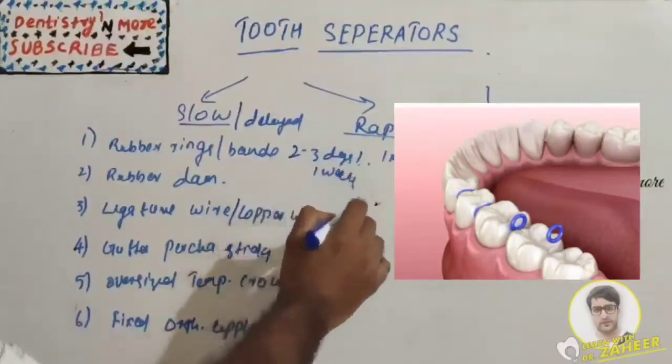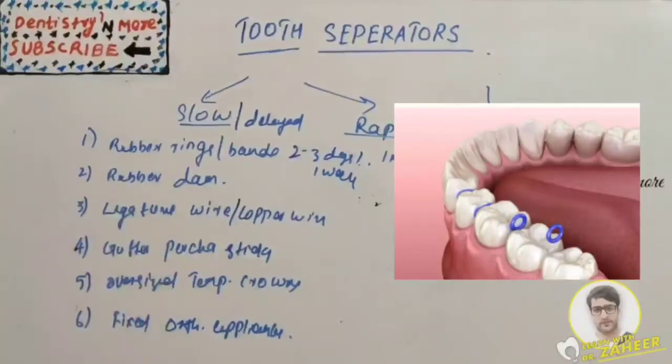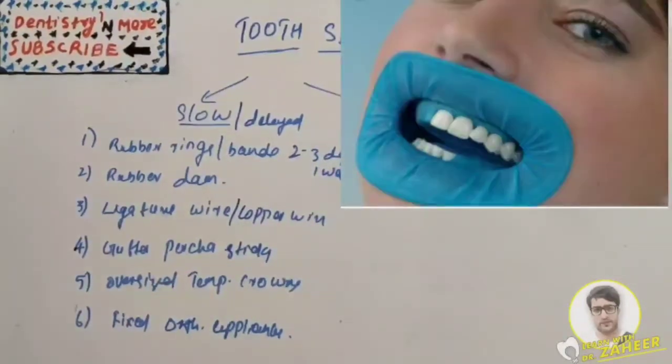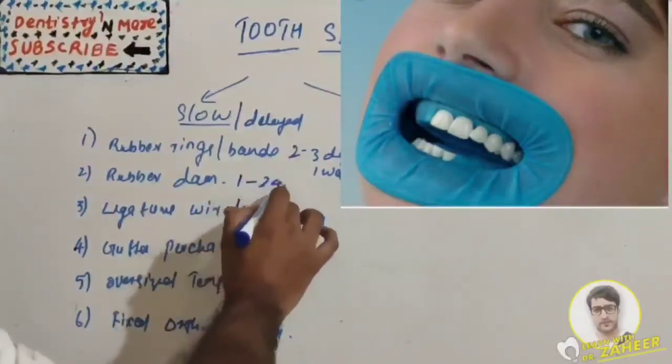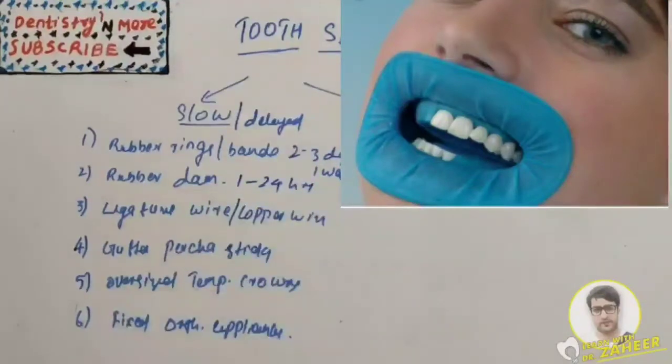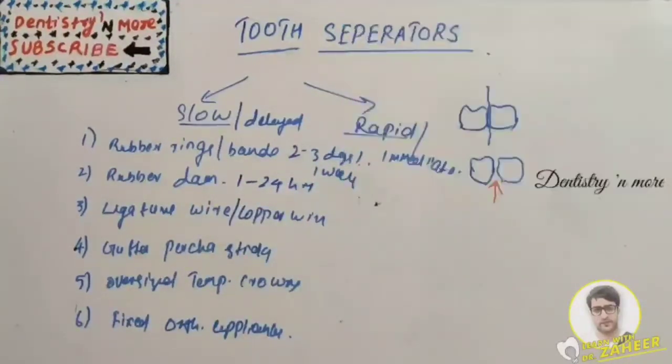In case of pain or swelling, floss may be used to remove the bands. The second one is rubber dam sheets. Again, it is stretched and placed interproximally between the teeth. Usually heavy or extra heavy type is preferred. The time of separation is 1 hour to 24 hours. In case of pain or swelling, floss may be used to remove the sheet.